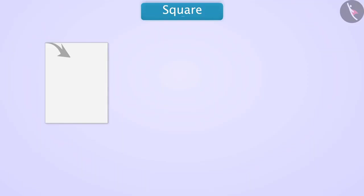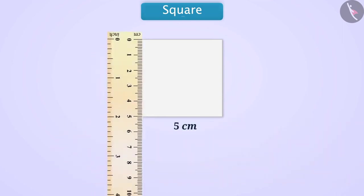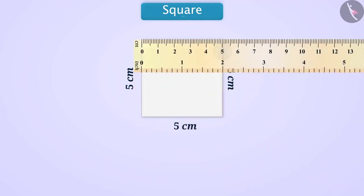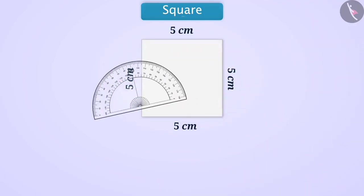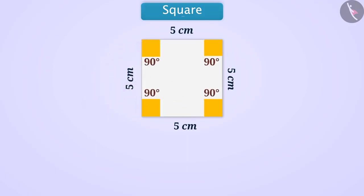Now let's talk about the square. Consider that we take a rectangular piece of paper. Place one of its corners on the opposite side in such a way that the shortest side falls just above the longest side and a right-angled triangle is made. Now cut the rectangular part outside the right-angled triangle, then open the folded part. You will get a quadrilateral which is a bit different from a rectangle. Take a ruler and measure the length of all its sides — the length of all sides is equal. With the help of a protractor, if we measure each angle, then each will be 90 degrees, meaning a right angle.